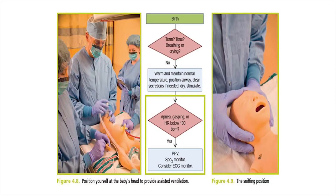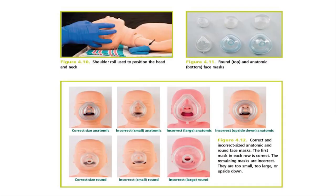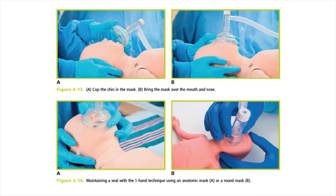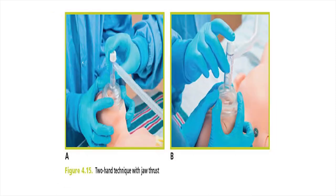While giving positive pressure ventilation, position yourself at the baby's head end and keep the baby's head in the sniffing position. A shoulder roll can help position the head. Masks can be round or anatomic face masks. The correct mask size should cover mouth and nose without being too small or too large. Cup the chin in the mask and bring the mask over the mouth and nose, maintaining a seal with a one-hand technique. If two people are available, use a two-hand technique with jaw thrust to keep the airway open while the second person gives PPV.